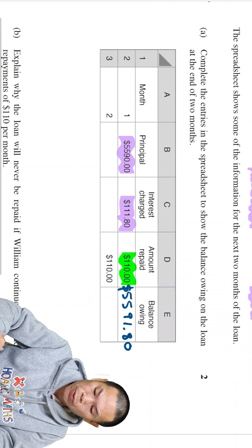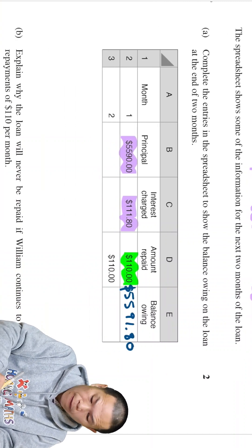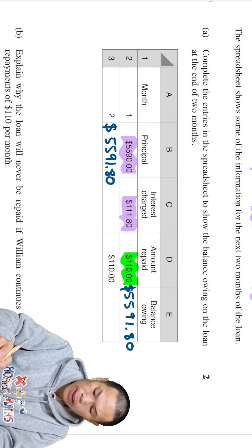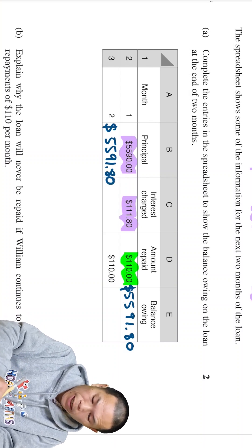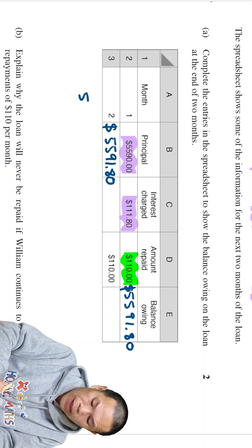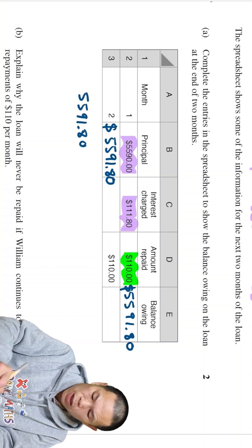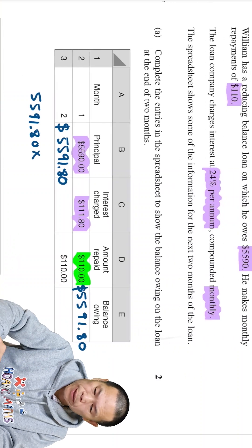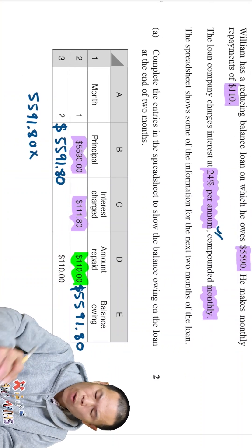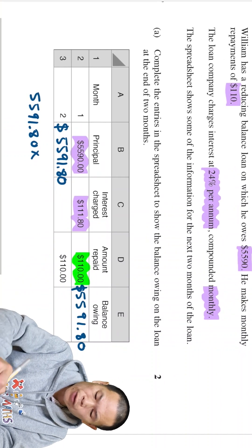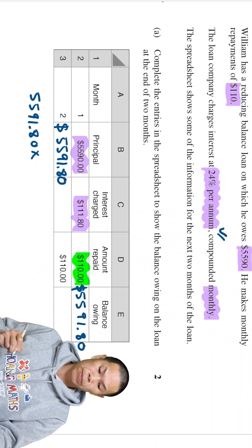So therefore, the principal here is $5,591.80. So the interest is, I can just quickly write here. Interest is $5,591.80 which times 12% per annum. But for one month, so 12 divided by 12 give me one.